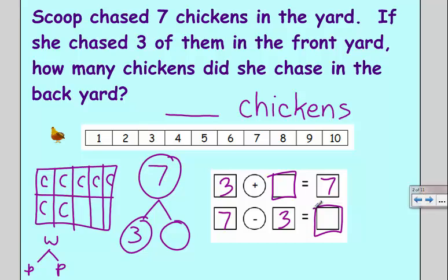So, I know I had seven chickens total. Three of them were in the front yard, so I'm going to take three of them and cross them off. So, how many chickens must have been in the backyard? One, two, three, four.